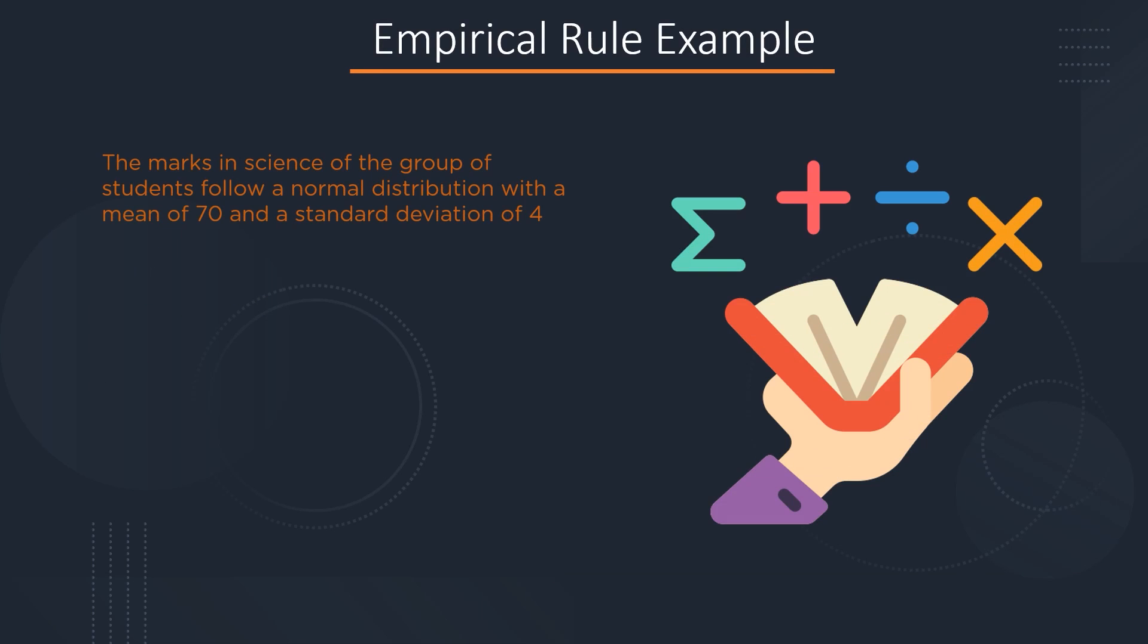Consider the following example. The marks in science of a group of students follow a normal distribution with a mean value of 70 and standard deviation of 4. We want to find a range around the mean that includes 95% of the grades. So let's first note down the important data. We are given a mean value of 70 and standard deviation of 4.